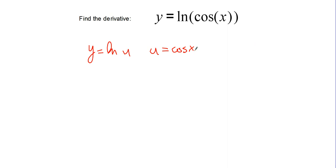The derivative of natural log of u is 1 over u, and the derivative of cosine x is negative sine x. So we end up with negative sine x over cosine x, which gives us negative tangent x.